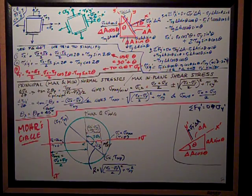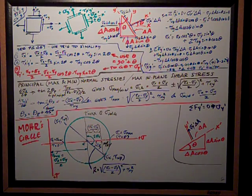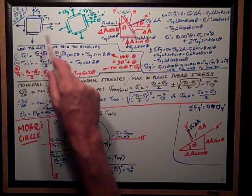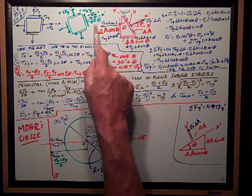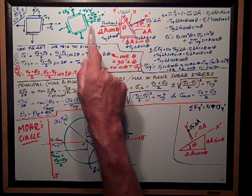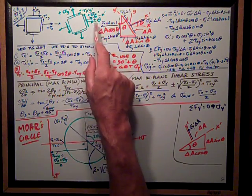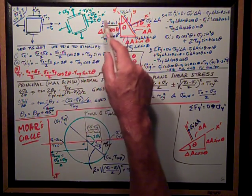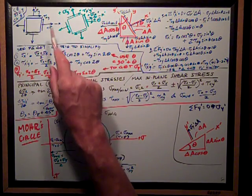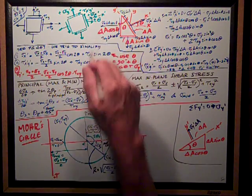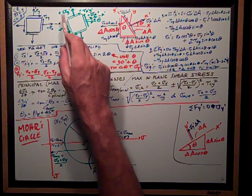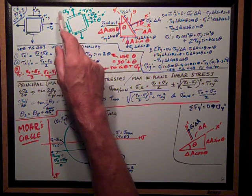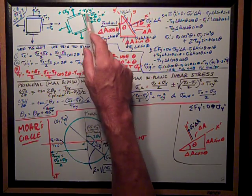We calculate stresses in an xy orientation, but we need to figure out the stress at any orientation of a stress element. So we rotate this stress element by an angle theta, where positive theta is measured counterclockwise from the x axis. This gives us a new x prime axis, y prime axis, and new stresses: sigma x prime (normal stress in the x prime direction), sigma y prime (normal stress in the y prime direction), and a new shear stress tau x prime y prime.